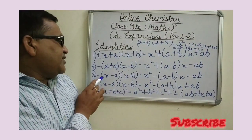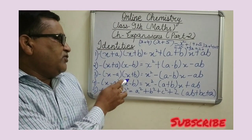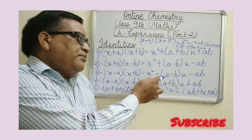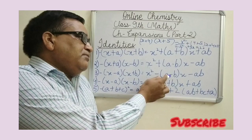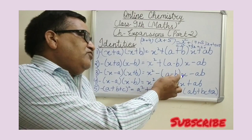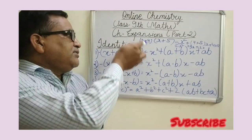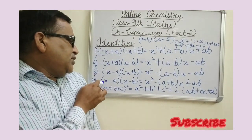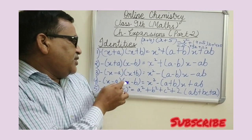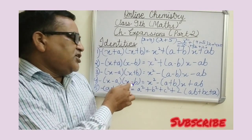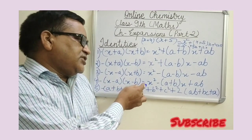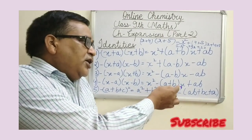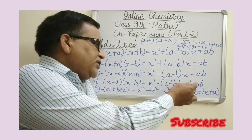The next identity: x minus a into x plus b is equal to x squared minus a minus b into x minus ab. Similarly, we solve this question. The next identity: x minus a into x minus b is equal to x squared minus a plus b into x plus ab.